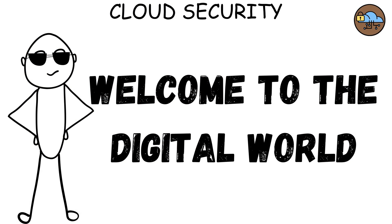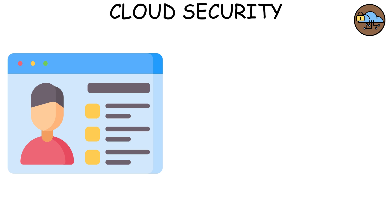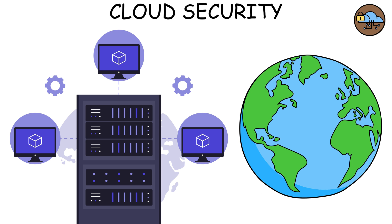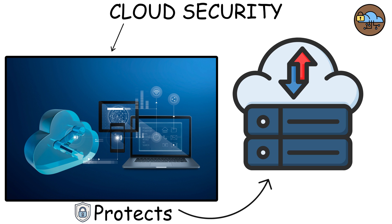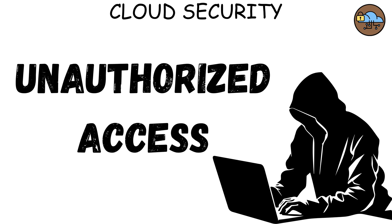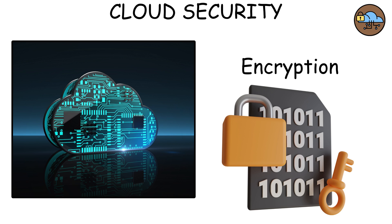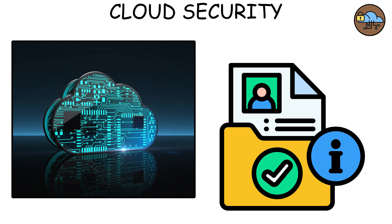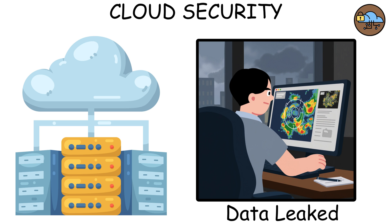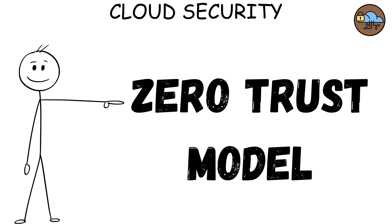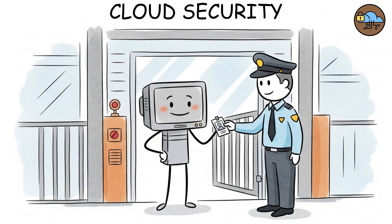Cloud security. Welcome to the era of everything online. Your data isn't on your hard drive anymore — it's floating in servers across the world. Cloud security protects virtual machines, databases, and storage from unauthorized access. It uses tools like access control, encryption, and identity management to make sure only the right people touch the right data. But cloud hacks are brutal. One misconfigured bucket on Amazon Web Services and millions of records leak overnight. That's why companies now use zero-trust models: never trust, always verify. Even your own system must prove who it is, every time.